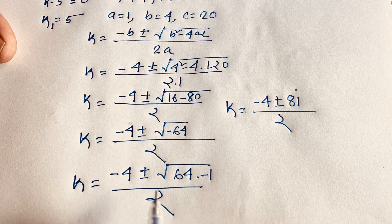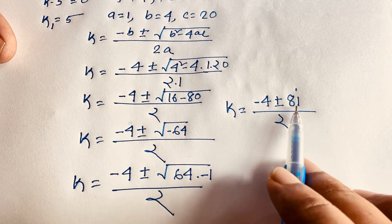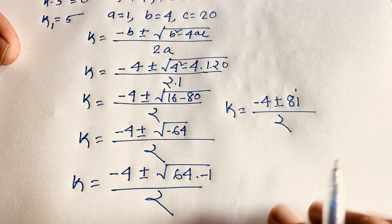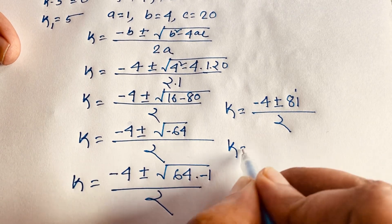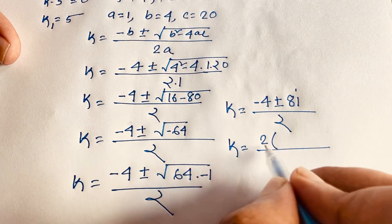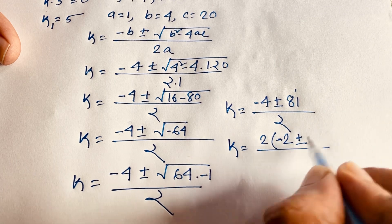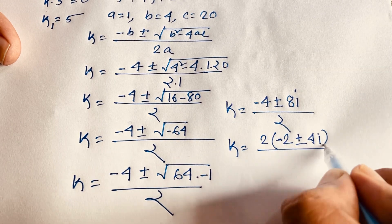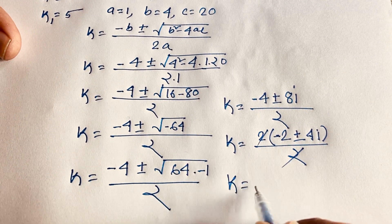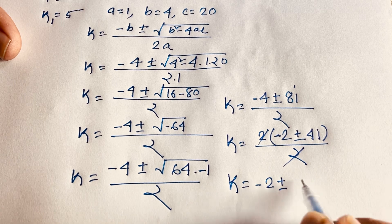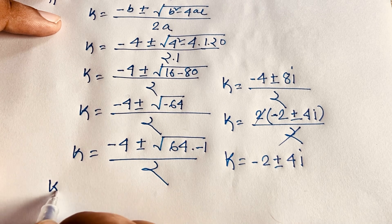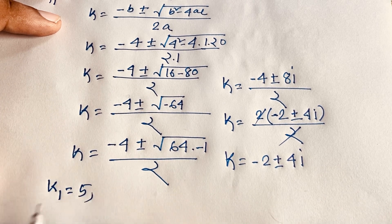We find k = (-4 ± 8i) / 2, because √64 = 8 and √(-1) = i. Factoring out 2: -4/2 = -2 and 8/2 = 4. So k = -2 ± 4i.